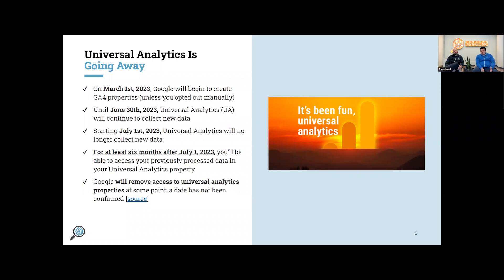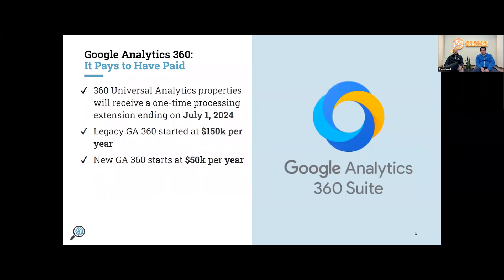Google has officially told us we'll have at least six months to continue accessing data in Universal Analytics, but they do note that access will eventually be removed — a specific date hasn't been confirmed. For those with Google Analytics 360, you had the ability to extend that deadline until July 1st, 2024 — one of the benefits of GA360 is that extended transition timeline.